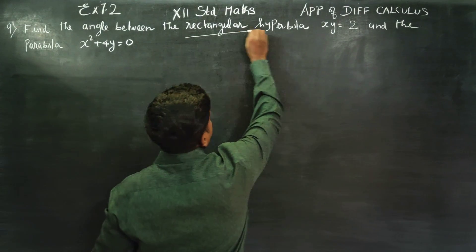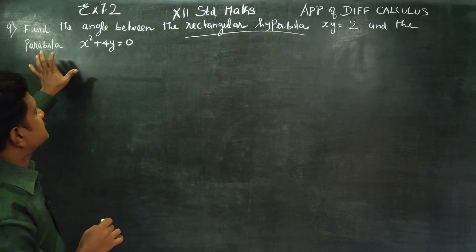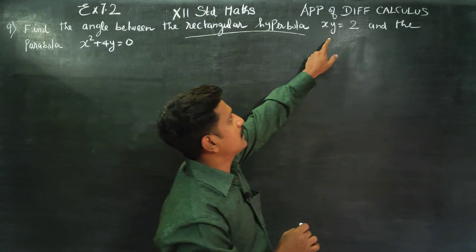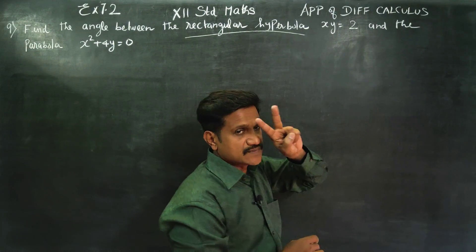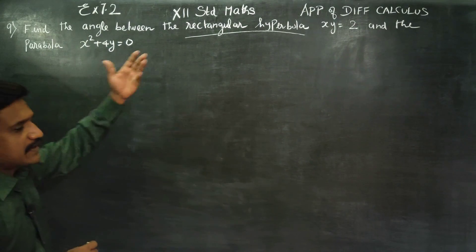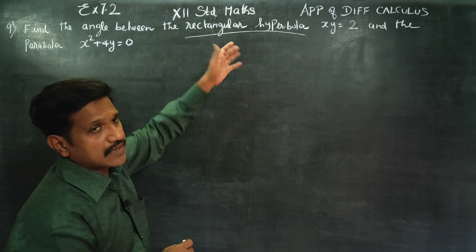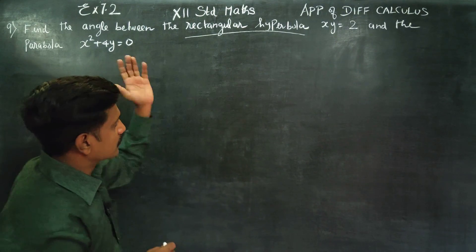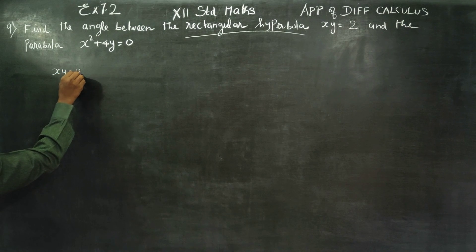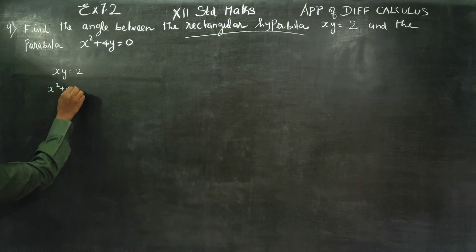It is not a very big problem about the name of the curves. The concept in this problem is you have to find the angle between two curves. The two curves may be a rectangular hyperbola, an ellipse, or anything. The two curves given are: xy is equal to 2, and x squared plus 4y is equal to 0.